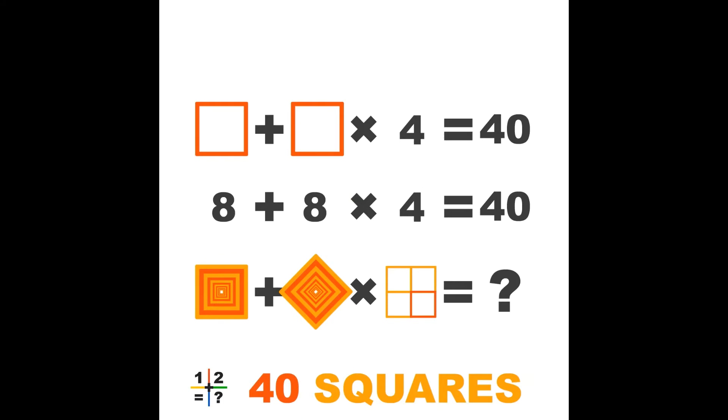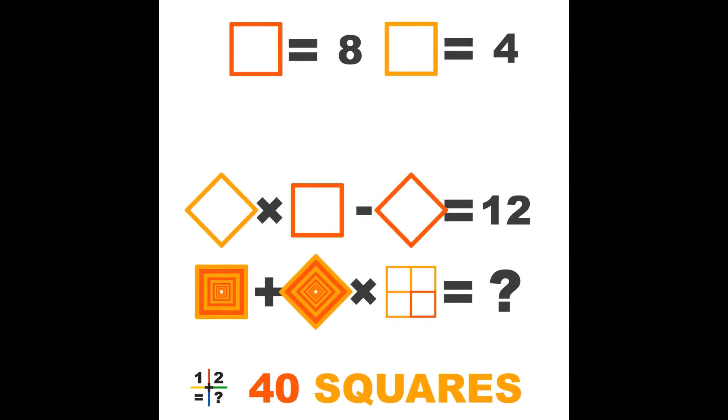8 plus 8 times 4 equals 40. First we multiply before we add. Now we know the value of the two squares. So the rest should be easy.